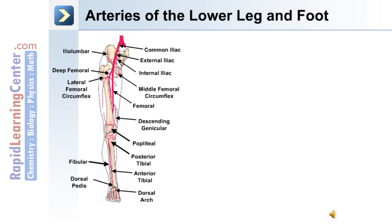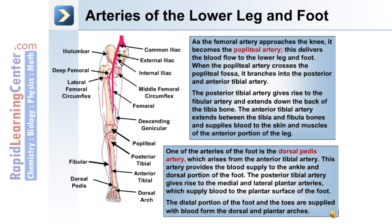Arteries of the lower leg and foot: as the femoral artery approaches the knee, it becomes the popliteal artery, which delivers blood flow to the lower leg and foot. When the popliteal artery crosses the popliteal fossa, it branches into the posterior and anterior tibial arteries. The posterior tibial artery gives rise to the fibular artery and extends down the back of the tibia bone. The anterior tibial artery extends between the tibia and fibula bones and supplies blood to the skin and muscles of the anterior leg. The dorsal pedis artery arises from the anterior tibial artery and provides blood supply to the ankle and dorsal portion of the foot.